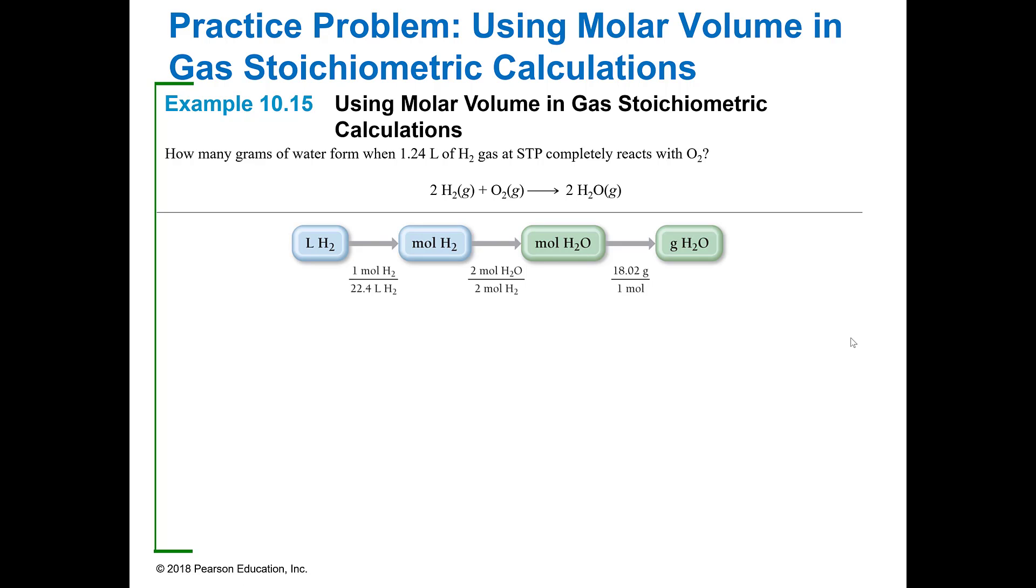Also, you can use molar mass in these stoichiometries as well. In the book they're showing you if you've got something at STP, you know some things about that. First of all, it's standard temperature and pressure. The temperature is 0 degrees or 273 K. In this particular case the volume is 1.24 liters, and the pressure is 1 atmosphere. Our R is 0.0821 liter atmosphere over mole K.